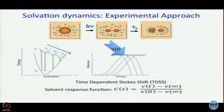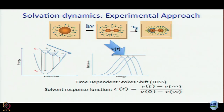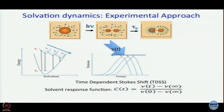C(t) is given as ν(t) minus ν(∞), divided by ν(0) minus ν(∞), where ν(t) is the emission maximum at time t, ν(∞) is the emission maximum after no further Stokes shift occurs, and ν(0) is the emission maximum at the instant of excitation. The time infinity means the time after which there is no further Stokes shift — and that is a contentious issue.